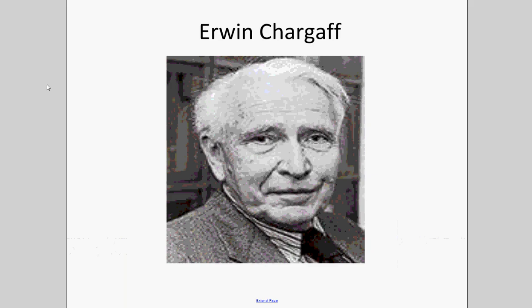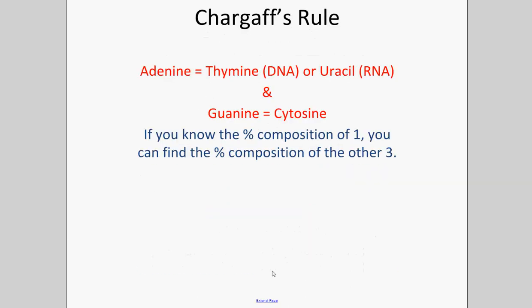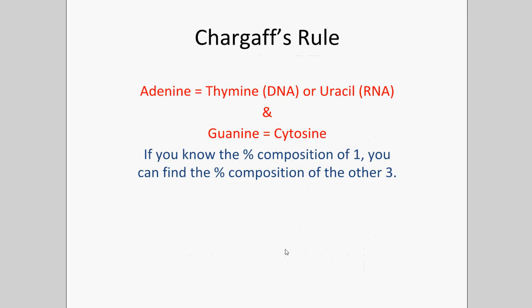Another important figure is Erwin Chargaff, who came up with Chargaff's rule. It states that the percentage of adenine in a cell is always equal to the percentage of thymine, and the percentage of guanine is always equal to the percentage of cytosine. So if you know the composition of one base, you can find the other three. For example, if there's 20% adenine, there's 20% thymine, leaving 60% split evenly between guanine and cytosine — 30% each. Chargaff's work was important for understanding the base pairing concept.